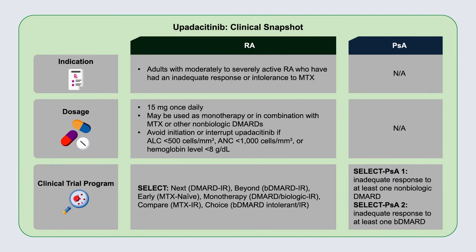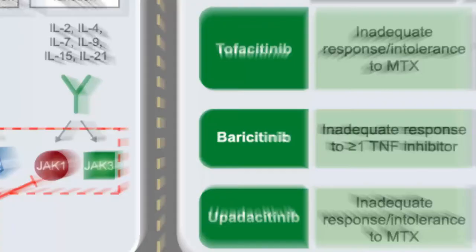Upadacitinib, the most recently approved drug for RA, had a large development program with evidence for all the same domains. Its dose is 15 milligrams once a day, and it shares many class-related toxicities and warnings with the other drugs — so we think of them as a class. The psoriatic data, just presented at EULAR, looks very promising, and we may be hearing something about this soon, but only time will tell.